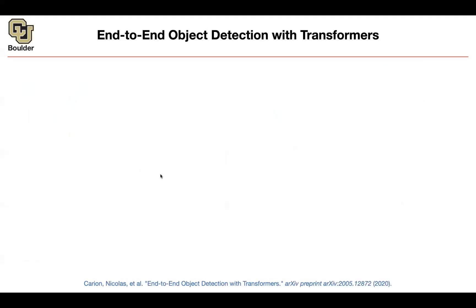We are moving on to transformers because we know that in 2019, 2020, 2021, there is a trend trying to replace convolutional neural networks with attention mechanisms. We have the same trend when it was time for transformers to replace recurrent neural networks. Can you replace convolutional neural networks with transformers? We saw a couple of attempts at doing that when it came to classification. Let's see whether we can do the same thing with detection.